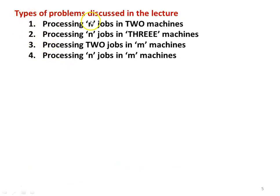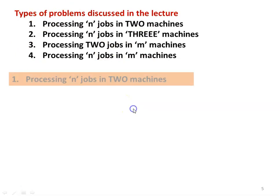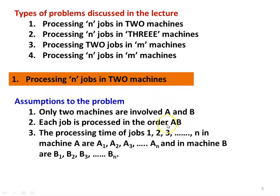There are different types of sequencing models. We will cover four types in this lecture series: the first type is processing N jobs on two machines; the second type is processing N jobs on three machines; the third is processing two jobs on M machines; and the fourth is processing N jobs on M machines. The first model — processing N jobs on two machines — has the following assumptions: only two machines are involved, named A and B.